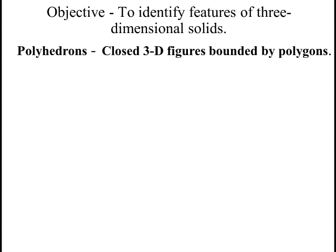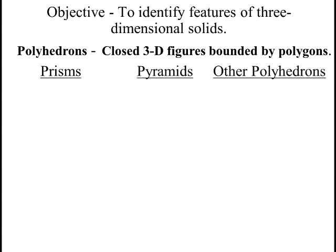There's a couple different groups we're going to be looking at. We're going to be looking at prisms and pyramids. There are other polyhedrons besides these, but we're going to focus mostly on prisms and pyramids. So what is a prism? It's a 3D figure that has two bases that are both parallel and congruent.